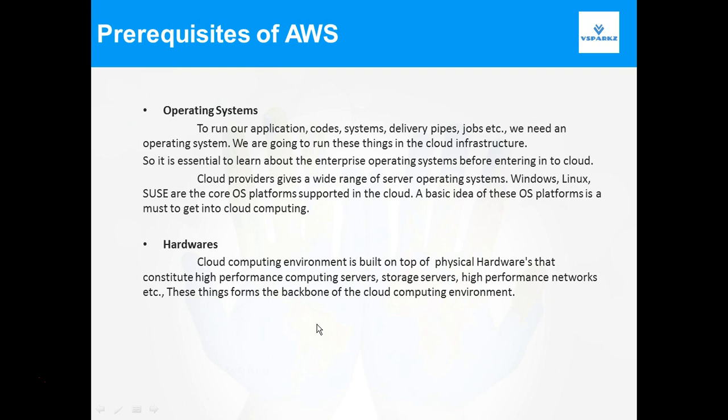The first prerequisite is operating systems and hardware. To run our applications, codes, systems, delivery pipelines, and jobs, we need an operating system. We are going to run these things in the cloud infrastructure, so it is essential to learn about the enterprise level operating systems before entering into cloud. Cloud providers like AWS and Google Cloud give a wide range of server level operating systems. Windows, Linux, and SUSE are the core OS platforms supported in the cloud. The basic idea of these OS platforms is a must to get into cloud computing.